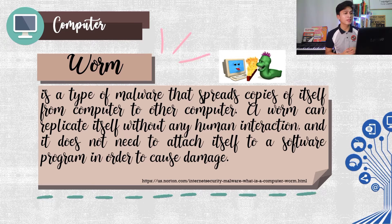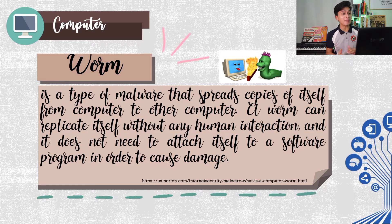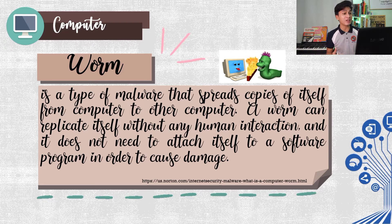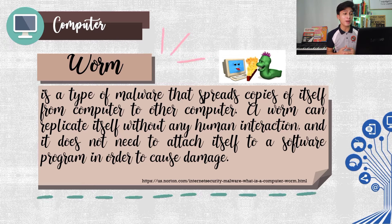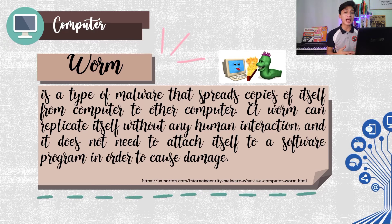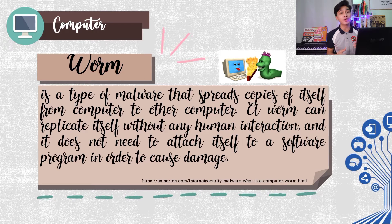The worms. A worm is a type of malware that spreads copies of itself from computer to another computer. A worm can replicate itself without any human interaction and it does not need to attach itself to a software program in order to cause damage. Computer worms are among the most common types of malware. They spread over computer networks by exploiting operating system vulnerabilities.